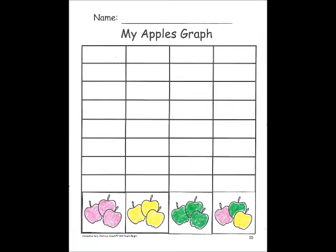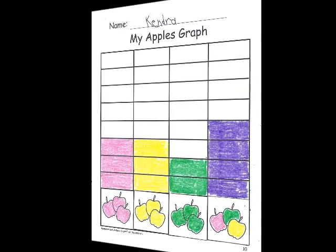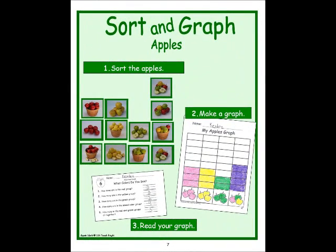Then they can actually make a graph from that data. I give them a reproducible, they label the bottom of that, and then they simply color in one box to represent each apple card in their sort. At a center, I would give them a three-step task like this: to sort the apples, to make a graph, and then to read their graph.